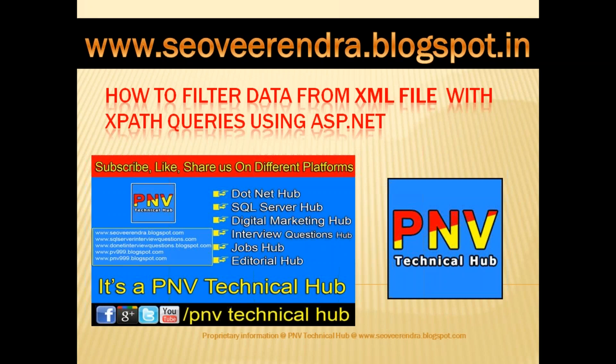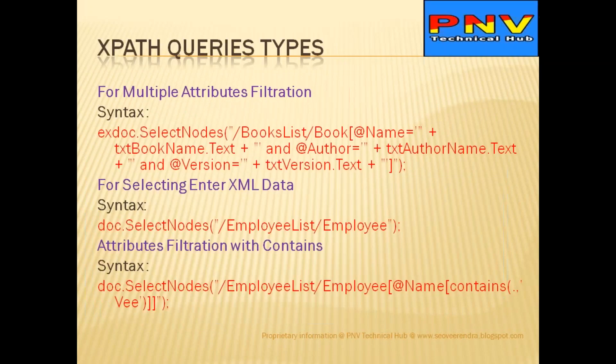In our current session, let's target how we are going to use XPath queries in our implementations. Generally, XPath is a query language that facilitates processing of XML documents. By using the selectNode method, if you want to restrict duplicate data based on multiple attributes, we can use the 'and' operator to concatenate, and you can pass the number of attributes you want to target.